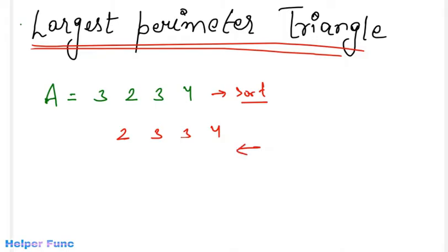That is, we will be going from this side and every time we will be comparing three largest elements. If this satisfies the condition of a triangle, then this will be my maximum perimeter triangle and I will return the perimeter of this. Otherwise, I will shift one side and then I will compare these three elements. Now why we are doing this?